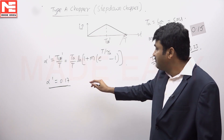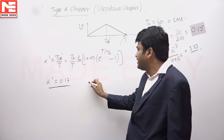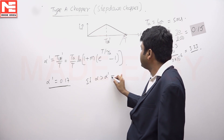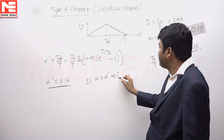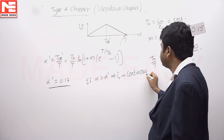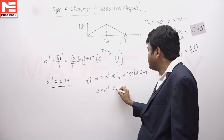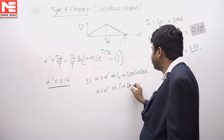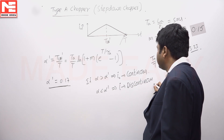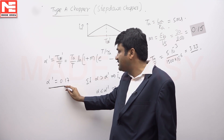When alpha equals alpha_dash, the current waveform is at the boundary. If alpha is greater than alpha_dash, then the current waveform is continuous. If alpha is less than alpha_dash, then the current waveform is discontinuous. Alpha_dash has been calculated as 0.17, which is the answer.